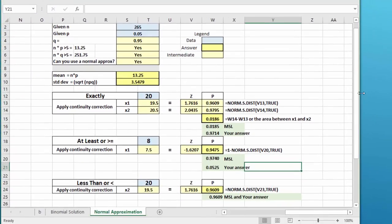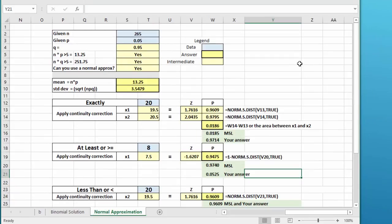I have a spreadsheet that I built, and I think I shared some of this with the class. I brought over the given information: n of 265 and p of 0.05. We have to check n times p and n times q to make sure they're both greater than 5. Calculated q, which is just 1 minus p, and both np and nq are much greater than 5, so we can use the normal approximation to the binomial. The formulas are n times p for the mean and the square root of npq for the standard deviation.